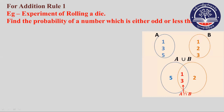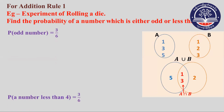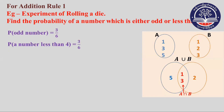This is the first step. The second step is the probability of 3 by 6. The probability of less than 4 is 3 by 6. This is the number which is either odd or less than 4.